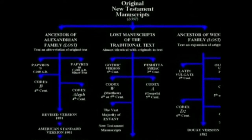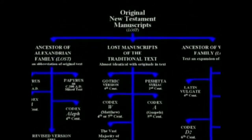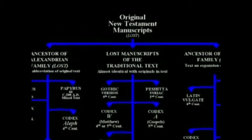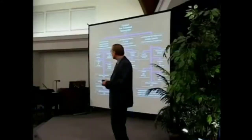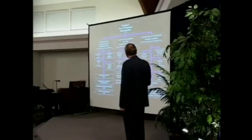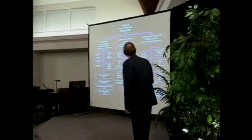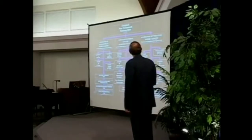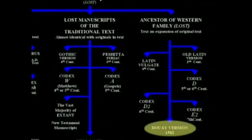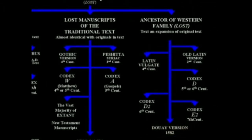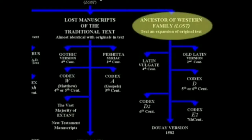Every single Bible in the world written before 1914 comes from here. Then there are two other streams. The one is the one that led to the Douay Version, which is basically the Jesuit Version. And the ancestor of the Western family, that is lost.